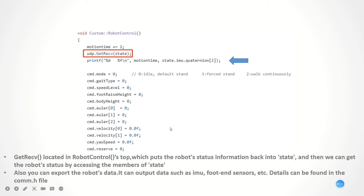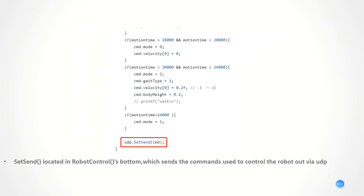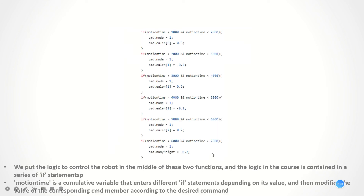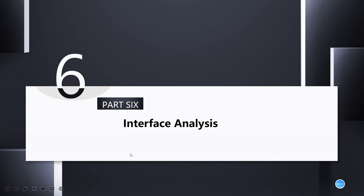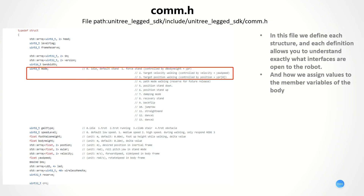You can output data such as IMU, foot sensors, and so on. The details can be found in the com.h file. Set command, located at the bottom of robot control, sends the commands used to control the robot out via UDP. We put the logic to control the robot in the middle of these two functions. The logic is contained in a series of if statements. Motion time is a cumulative variable that enters different if statements depending on its value, and then modifies the value of the corresponding CMD member according to the desired command.